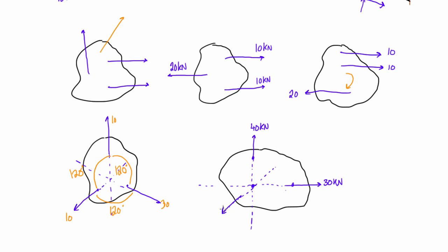That force has to have the components to cancel out the translations. If we do a simple force triangle with 30 and 40, the resultant of those two forces would be 50 kilonewtons. So we need a force going down and to the left at 50 kilonewtons — the y-component would be 40 and the x-component would be 30 to the left. That cancels everything out, and there are no force couples created because all three lines of action pass through the same point.